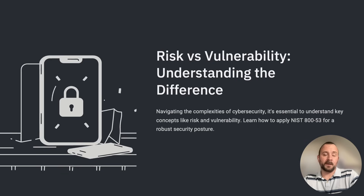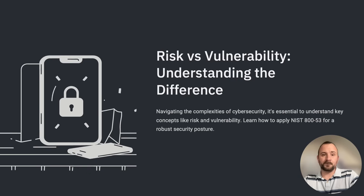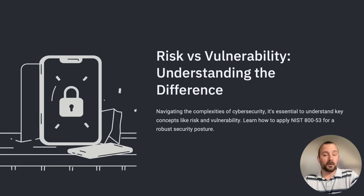Next is vulnerability. It's a weakness or flaw in a system, process, or control that can be exploited by a threat. Characteristics include exposure to risk, lack of controls, inadequate policies, and procedural gaps. An example of a vulnerability would be unpatched software that allows an attacker to gain access to your company's systems.